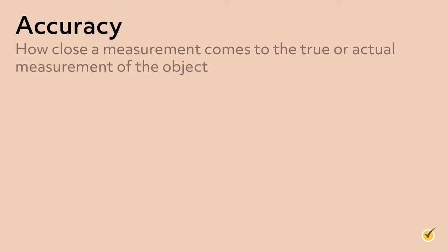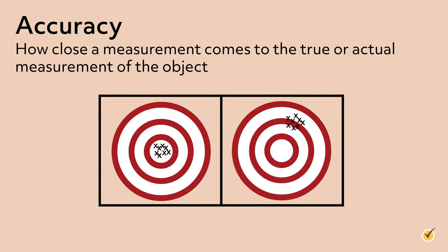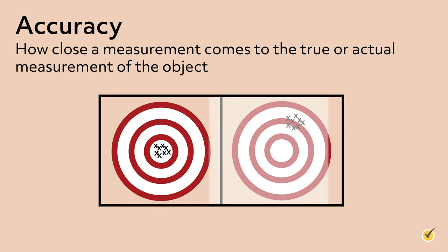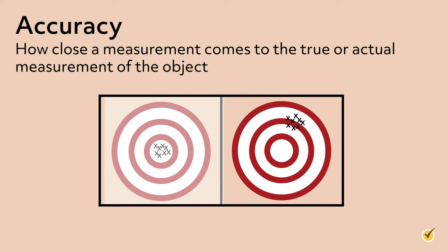Accuracy refers to how close a measurement comes to the true or actual measurement of the object. In other words, it's used to describe how close the data is to the correct data. Consider these two targets. Assuming that the true or actual measurement is the target's bullseye, the target on the left shows accuracy and precision — all measurements are located at the bullseye. The target on the right does not show accuracy, even though it is precise, because the measurements are not located at or near the bullseye.